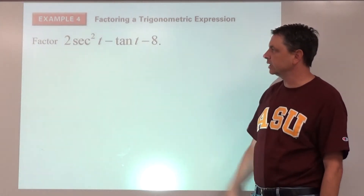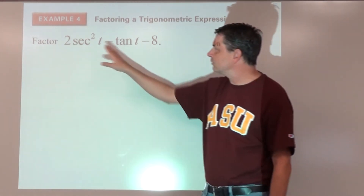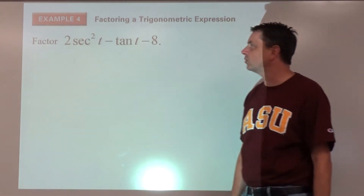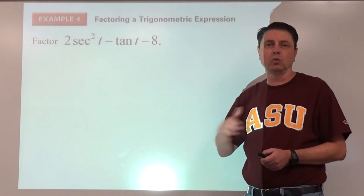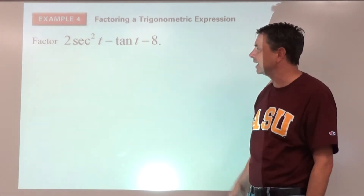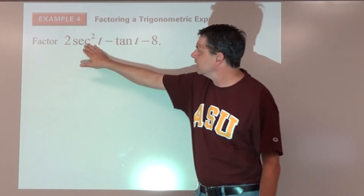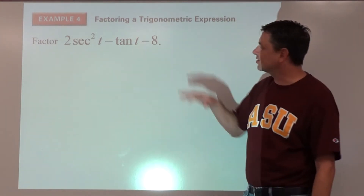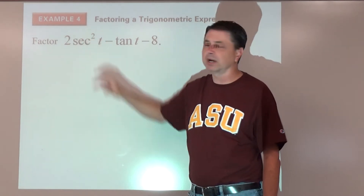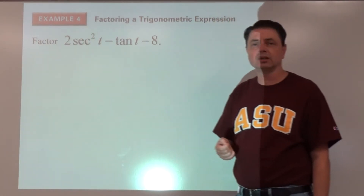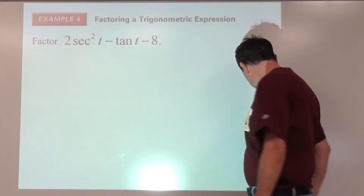More factoring — but having two different functions could be problematic. If we could factor one out as a common factor it might not be an issue, but that's not possible here. So we're going to change everything to one function, focusing on secant squared t.